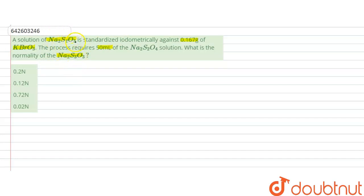when sodium thiosulfate solution is completely standardized against the KBrO3 solution, their gram equivalents will become equal. So we can say number of equivalents of KBrO3 will be equal to number of equivalents of sodium thiosulfate solution.